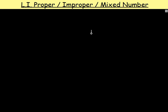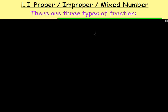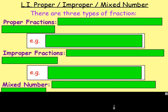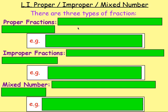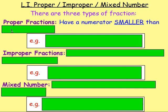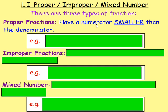Can anybody tell me? These are the three types of fractions that you get: proper fractions, improper fractions, and mixed numbers. A proper fraction is when the numerator is smaller than the denominator. The numerator is the number at the top — N for North — and the denominator is at the bottom — D for Down. For example, one half is a proper fraction because one is smaller than two.